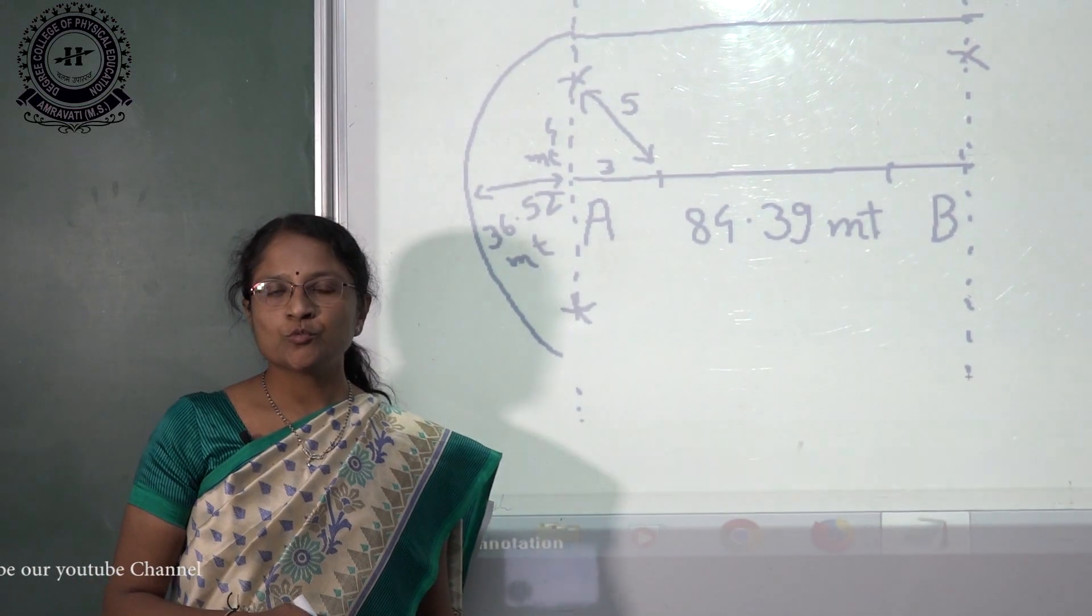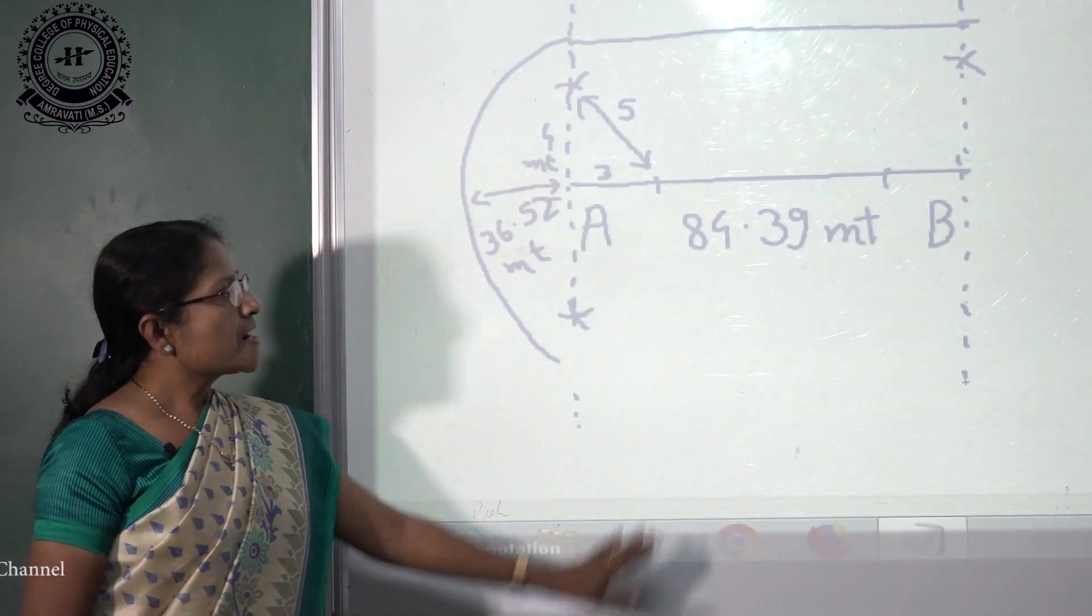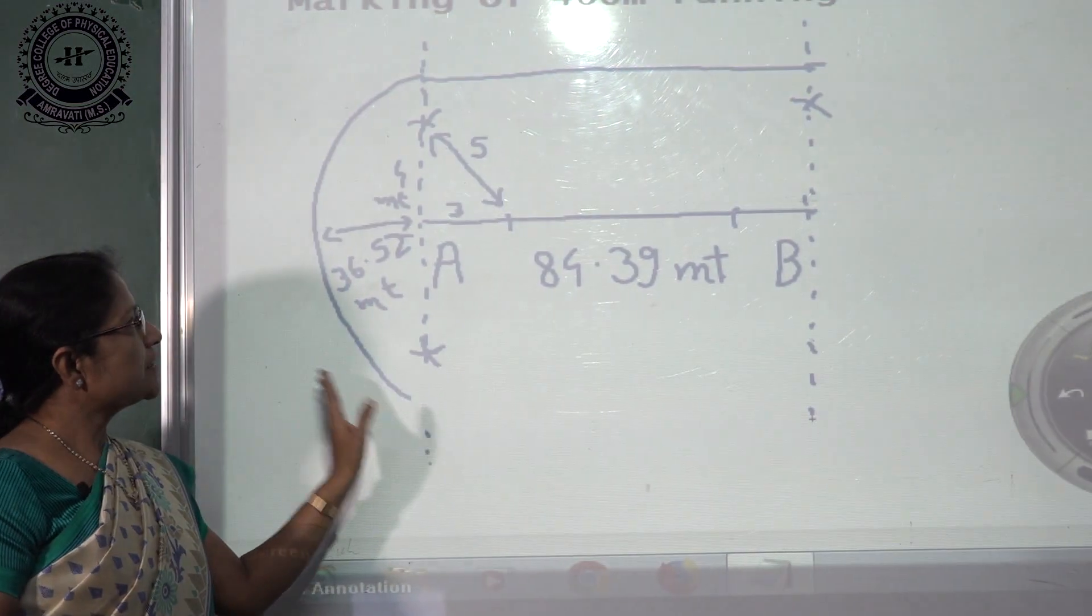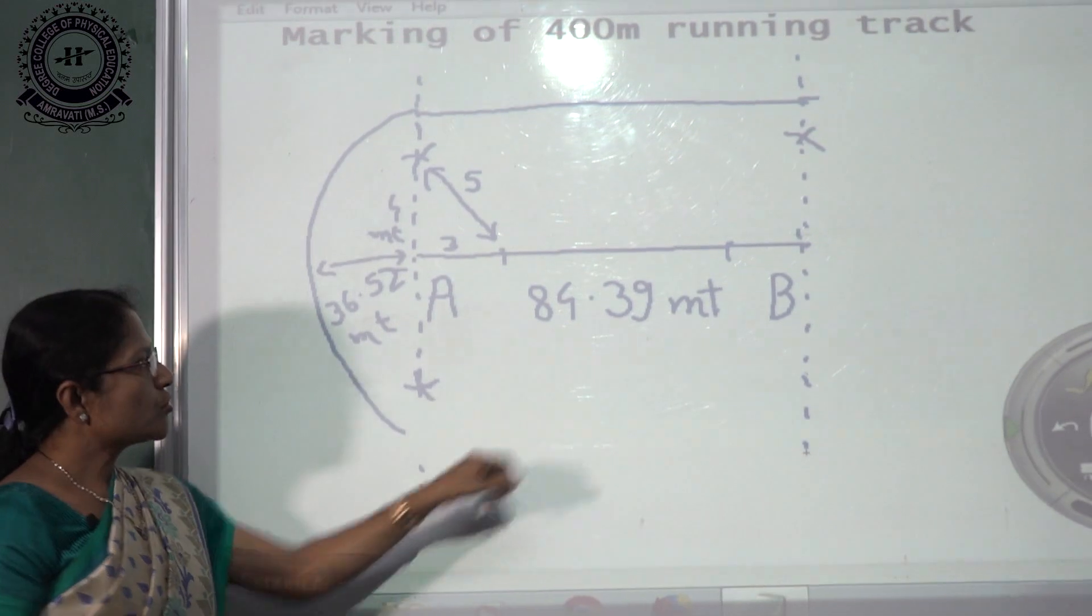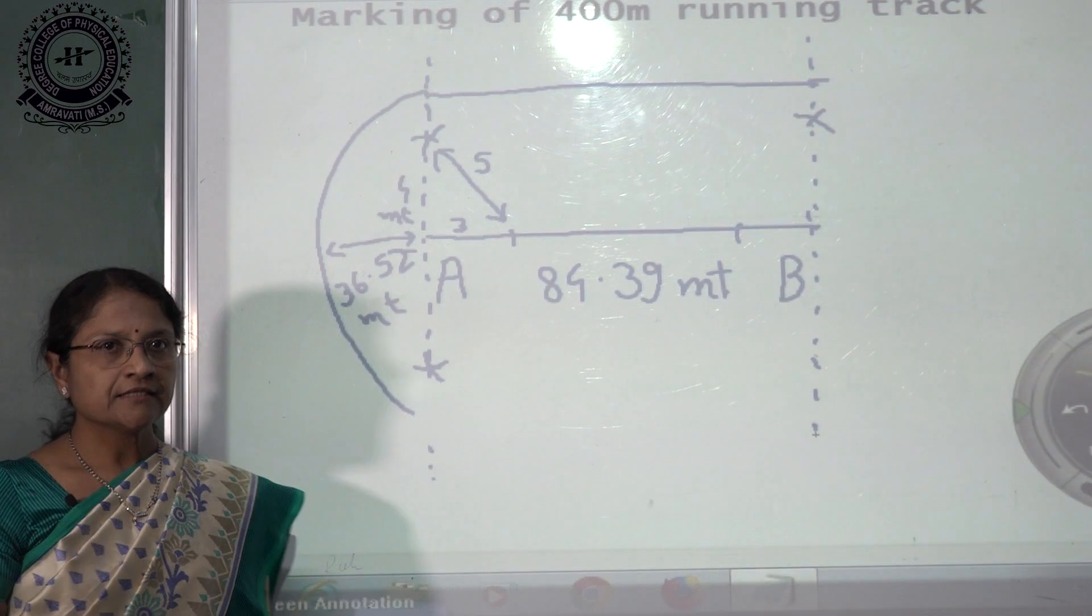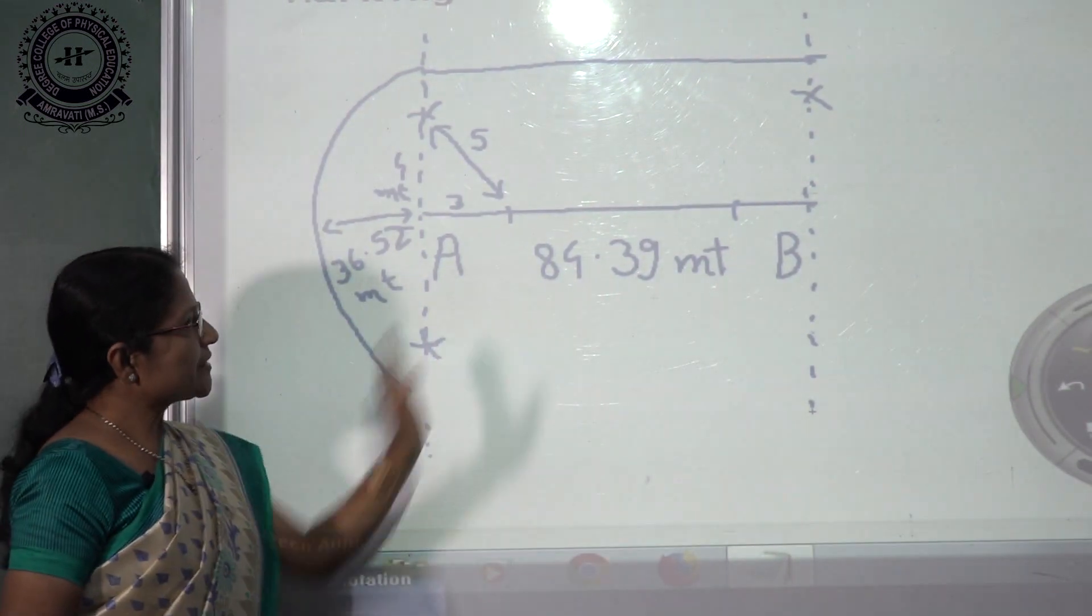By using interactive board, I draw track. Now see, we find out straight and marking radius. So this is our straight value 84.39. This is straight of this measurement.